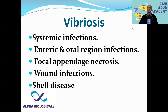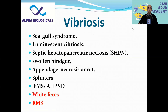Different types of Vibriosis exist: systemic Vibriosis, and enteric or oral infections. For example, some Vibrio species affect the hepatopancreas, some affect the midgut, and some affect the stomach of the shrimp. In some cases there is focal appendage necrosis, wound infections, and shell diseases like black spot. All these diseases caused by Vibrio are together called Vibriosis.